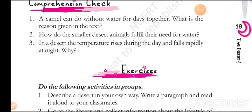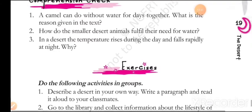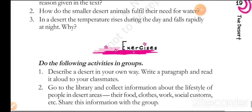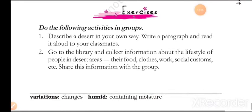Question three: In a desert, the temperature rises during the day and falls rapidly at night — why? In a desert, the temperature rises during the day and falls rapidly at night because of the lack of moisture in the air. The moisture in the air normally acts as a blanket, but deserts lack this, causing rapid heating by day and cooling at night.